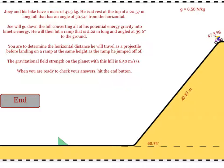When you're totally done, click on the end button. Submit your answer for his horizontal distance, and then click on Joey to test if he did it correctly.